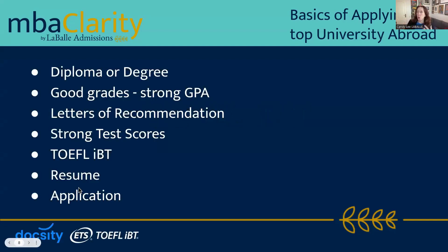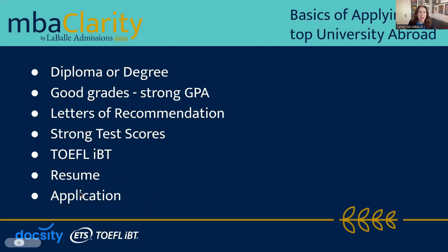Let's do a quick review of what I call the basics. If you want to get into a top university abroad, you need: a diploma or degree with good grades and a strong GPA; powerful letters of recommendation — build those relationships; make sure you know which tests to take for which university and program; and get your TOEFL IBT score, knowing each school or program may require a different score. For post-experience programs like MBA, you also need a resume and to fill out a data form application.